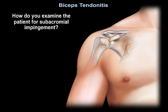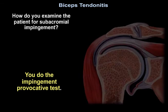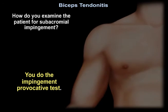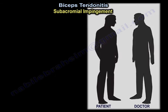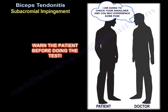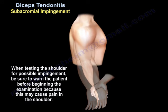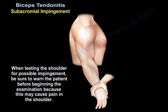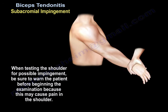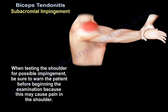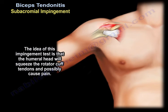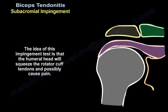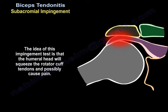How do you examine the patient for subacromial impingement? You perform the impingement provocative test. When testing the shoulder for possible impingement, make sure to warn the patient before beginning the examination because this may cause pain. The whole idea of the impingement test is that the humeral head will squeeze the rotator cuff tendon and possibly cause pain.